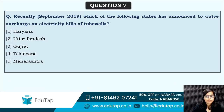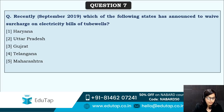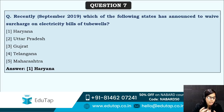Next: which of the following states has announced to waive the surcharge on electricity bills of tube wells? A particular state government announced they are going to waive electricity bills of tube wells — obviously to support farmers so they can irrigate their fields. Most of you are saying it is Haryana — that is correct. The Haryana state government has waived the surcharge on electricity bills of tube wells.